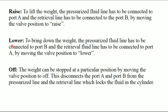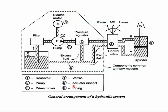Lower operation: To bring down the weight, the pressurized fluid line has to be connected to port B and the retrieval fluid line has to be connected to port A by moving the valve position to lower. Off operation: The weight can be stopped at a particular position by moving the valve position to off. This disconnects port A and B from the pressurized line and the retrieval line, which locks the fluid in the cylinder. This is the general arrangement of the hydraulic system.